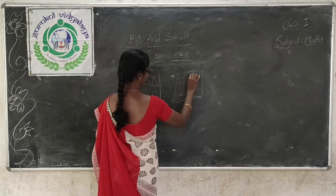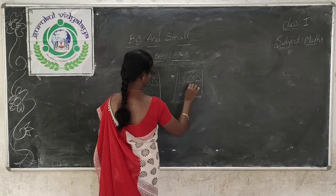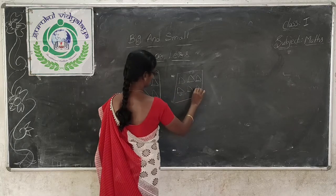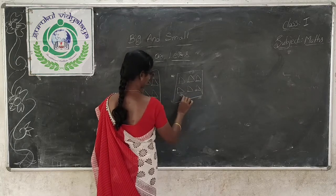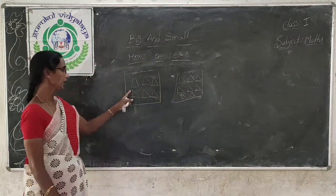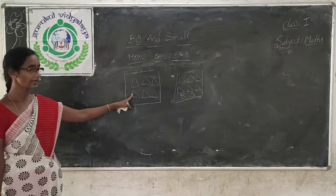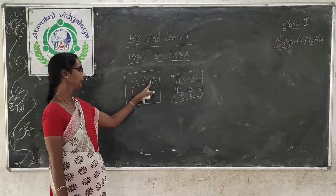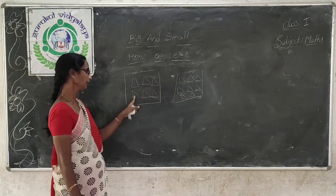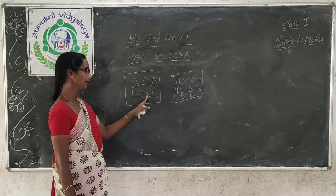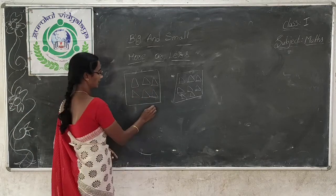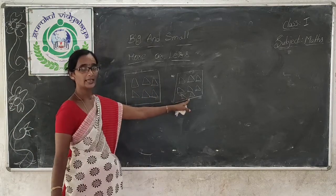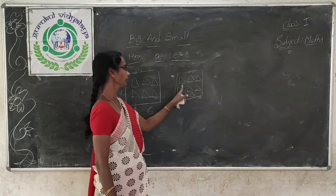1, 2, 3, 4, 5, 6, 7, 8. See, how many triangles are there here? 1, 2, 3, 4, 5, 6 triangles. How many triangles are there in this group?